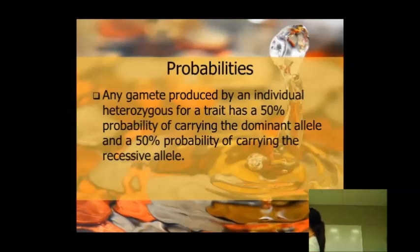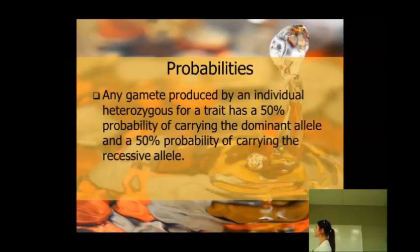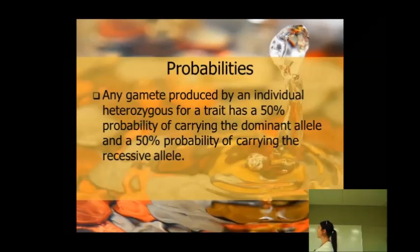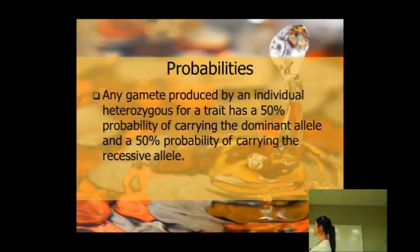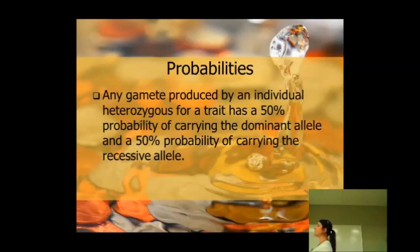Probabilities: any gamete produced by an individual that is heterozygous for a trait has a 50% probability of carrying the dominant allele and a 50% probability of carrying the recessive allele.